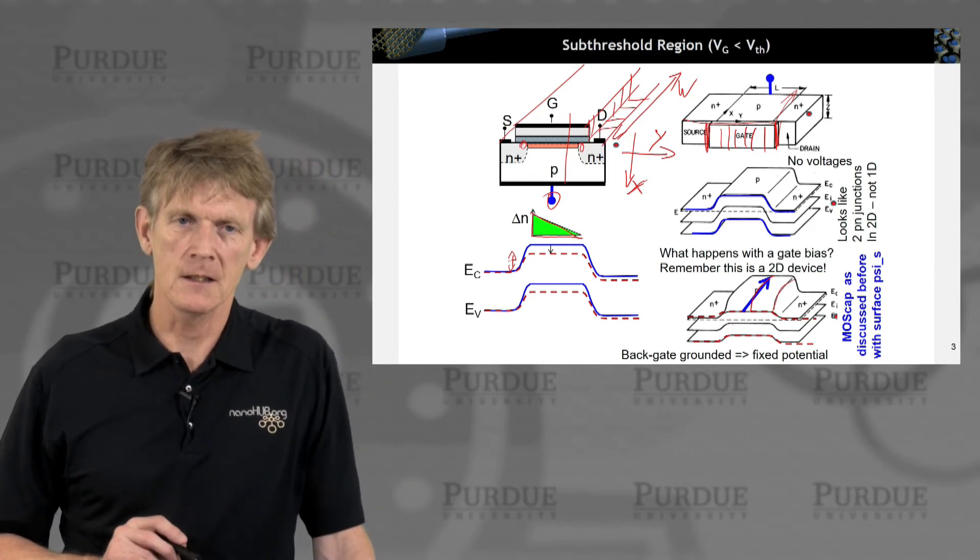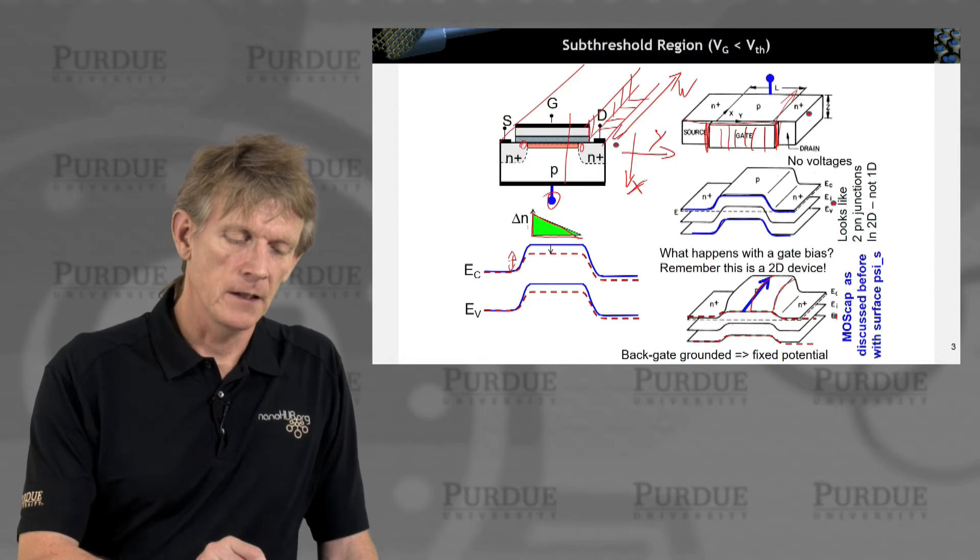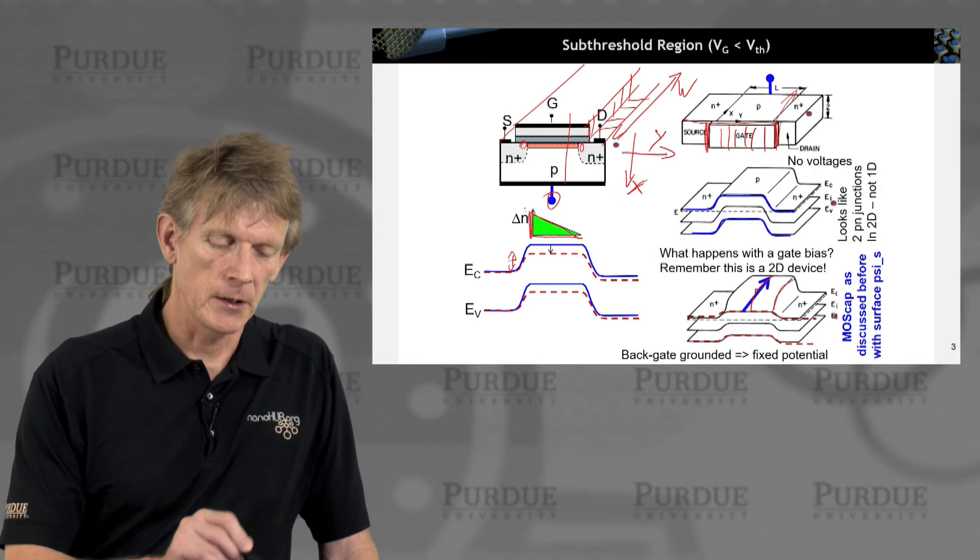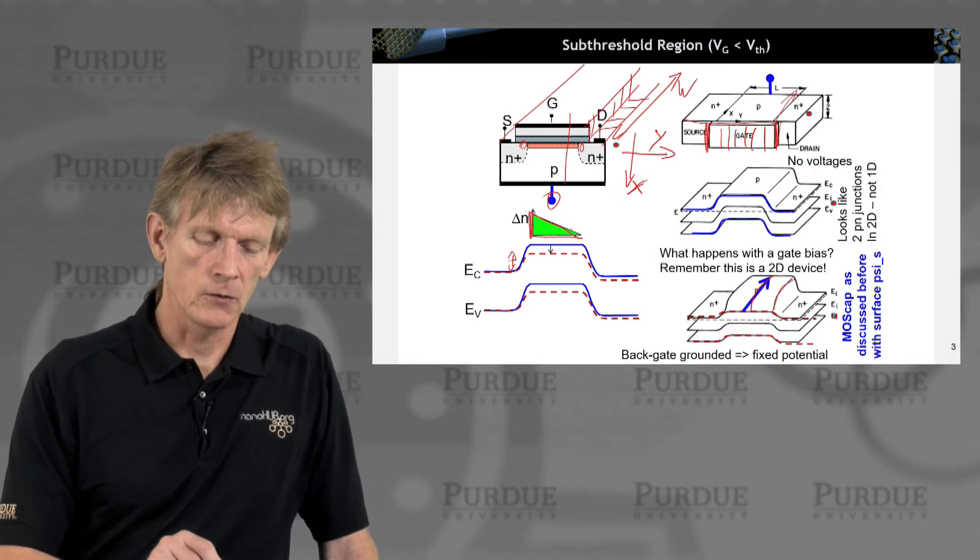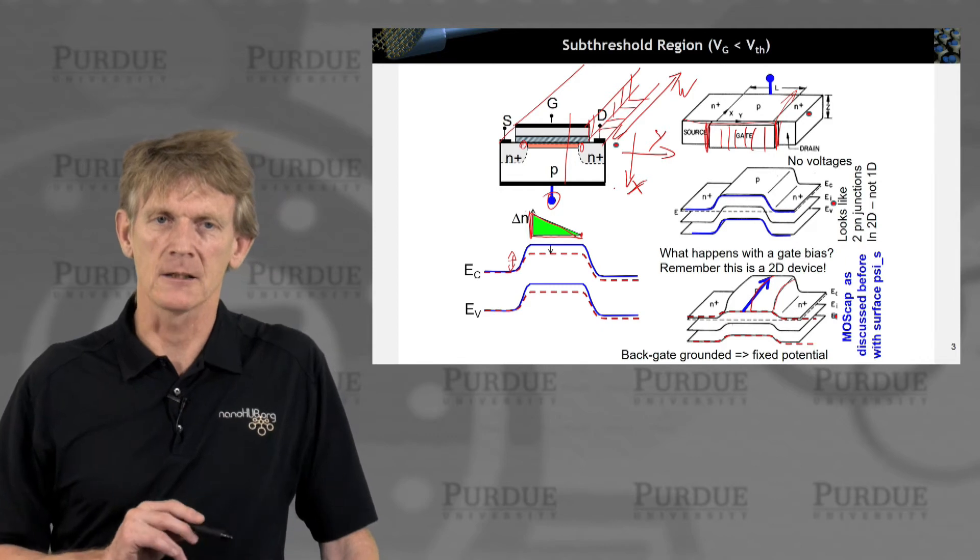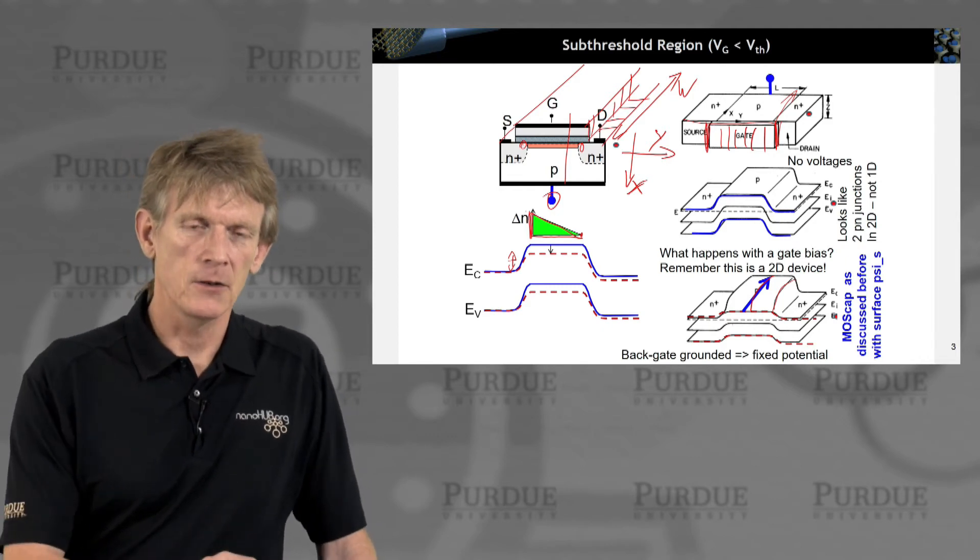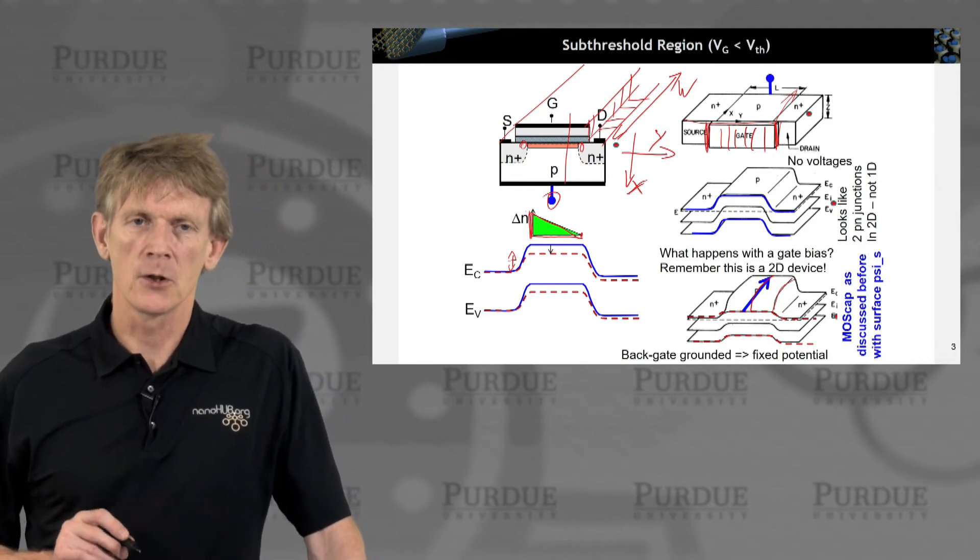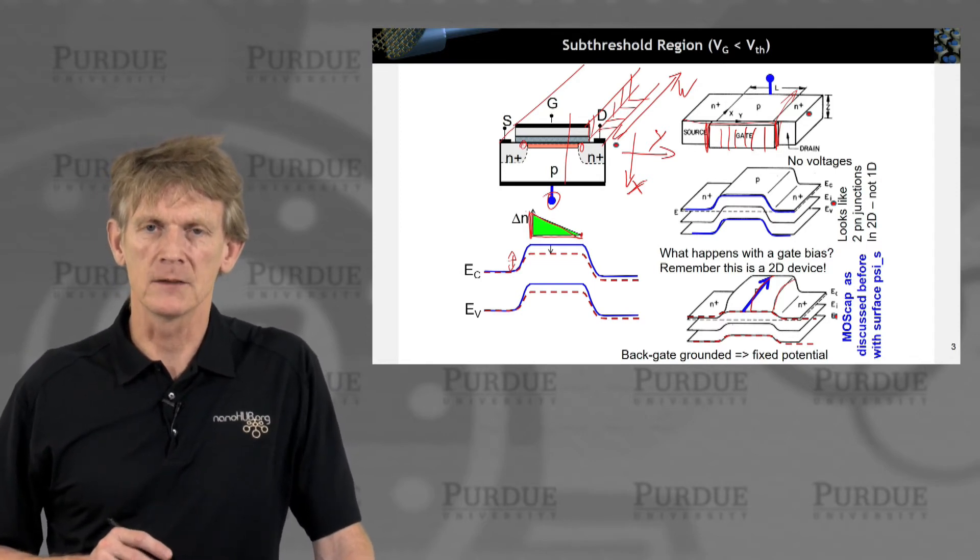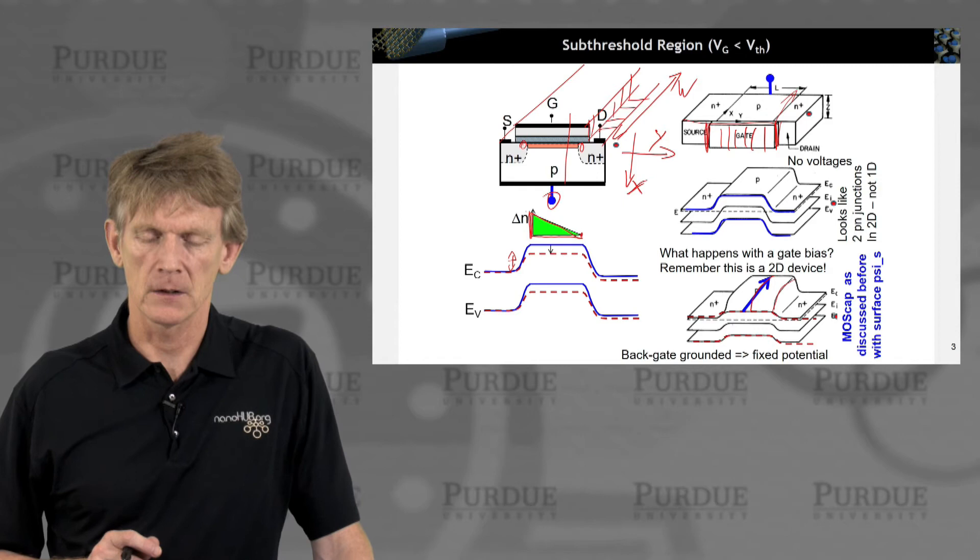it looks like a BJT where you have an injection of carriers from diffusion. You can calculate the boundary condition. And if you had an overall voltage applied and you don't have back injection from the other side, the carriers will decay. And you will have thermal flow, the diffusion flow induced by this PN junction.